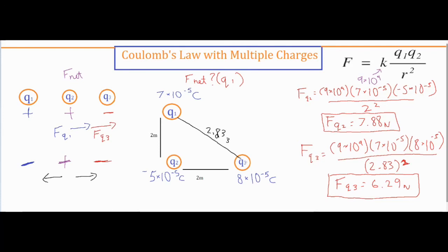So now that we have all of our numbers, we have Q2 acting on Q1 and what it does is it pulls it down. I know it pulls it down because this is positive and this is negative and then opposites attract. So it's pulling it down with 7.88 newtons of force. And this is where it gets a little bit more complicated. Between Q1 and Q3, these are both positive numbers so I know it's going to be a force of repulsion, so it's going to push it away, and we know that the force it's pushing away is 6.29 newtons.